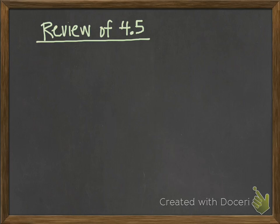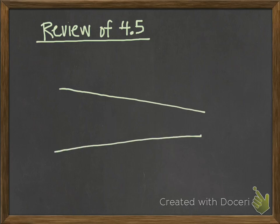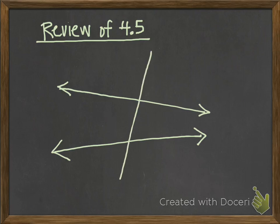So in 4.5, we talked about a transversal, which basically is a line that intersects two or more lines. So I've got two lines here. If I draw a line that intersects them, that line is called the transversal.